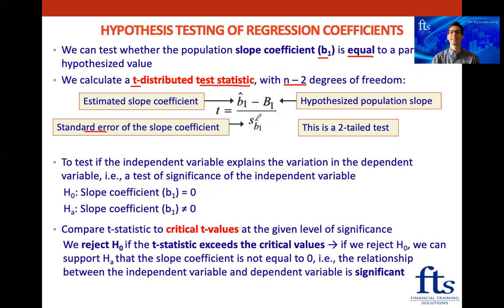This is a two-tailed test because we're testing whether the slope coefficient is equal to a certain value — and remember, if it's 'equal to,' it is a two-tailed test. To test if the independent variable explains the variation in the dependent variable, this is a test of significance of the independent variable.